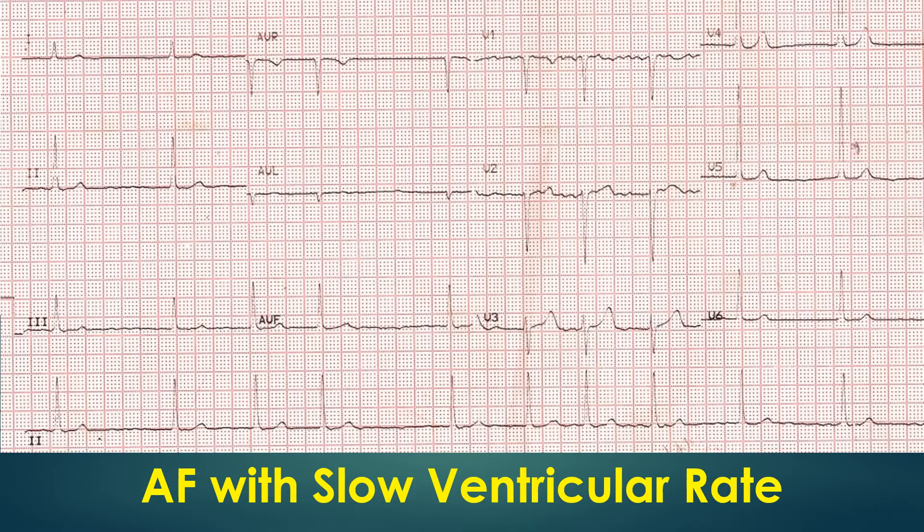When the fibrillary waves are more than 1 mm in amplitude, they can be considered as coarse atrial fibrillation. Coarse atrial fibrillation usually indicates larger reentrant circuits and hence larger atria. Coarse atrial fibrillation is classically seen in mitral stenosis with large left atrium.